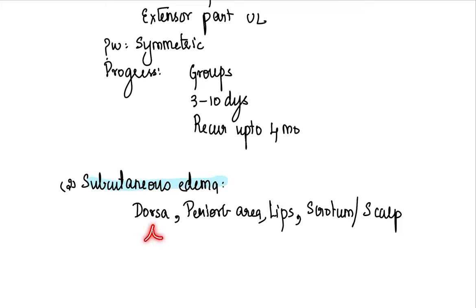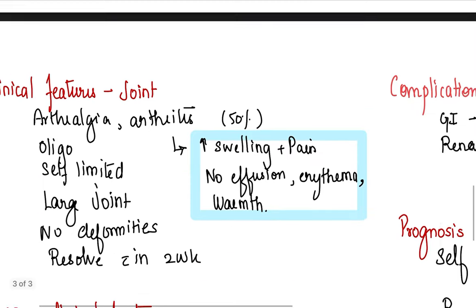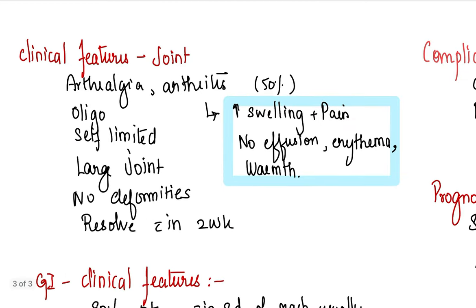This is about rash. What other skin involvement can be seen? Subcutaneous edema can be seen. So subcutaneous edema is commonly seen in dorsum of hand and foot, periorbital area, lips, scrotum, or scalp. What about joint involvement?